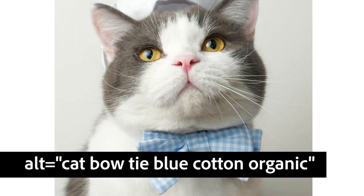I will definitely want to include 'cat bow tie' in the image alt text. You'll want to include keywords so that Google knows what you're talking about and understands what you're trying to rank for or what is most important about your image. Keywords help Google and other search engines understand the content of your image, and keywords are also important for ranking.